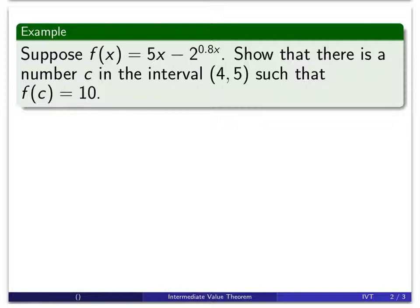Our first example, we have a very simple function, 5x minus 2 to the 0.8x. We want to show that there's a number c in the interval from 4 to 5 so that f(c) is equal to 10. So a very straightforward application of the Intermediate Value Theorem.